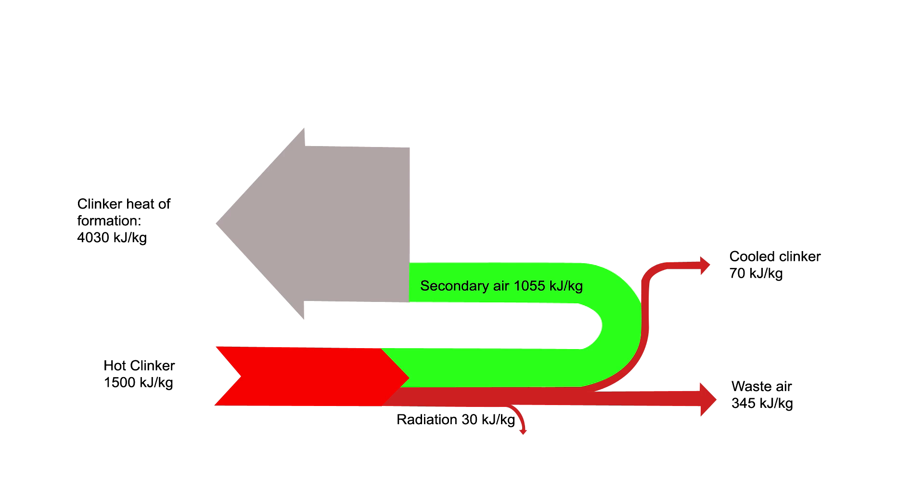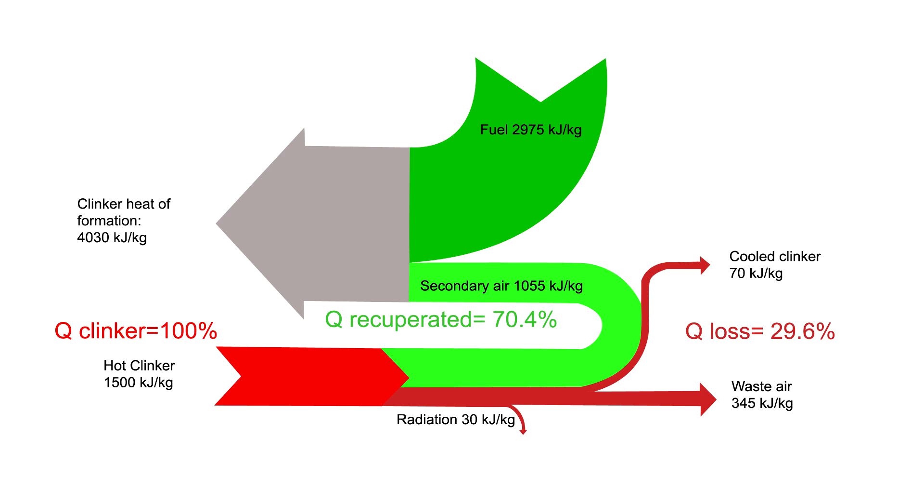To achieve the clinker heat of formation, we will need to add the difference as fuel. In terms of cool efficiency, it would be the inputs minus the total losses, which gives us the cooler efficiency. This is just an example. A proper heat balance should be made to calculate your cooler efficiency.